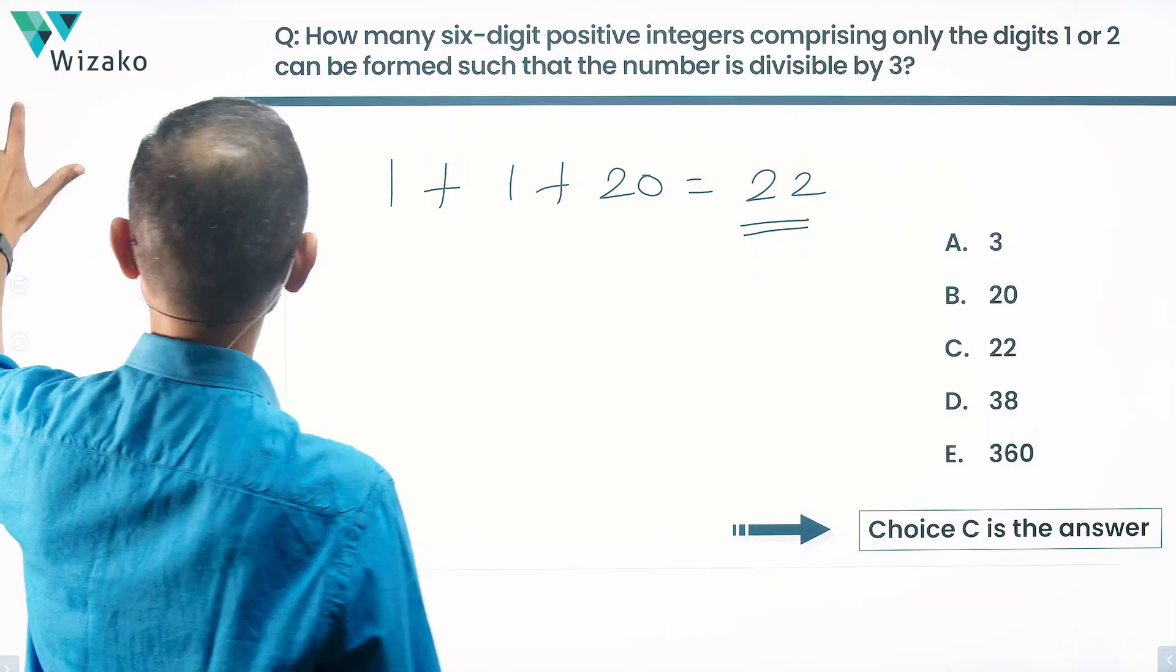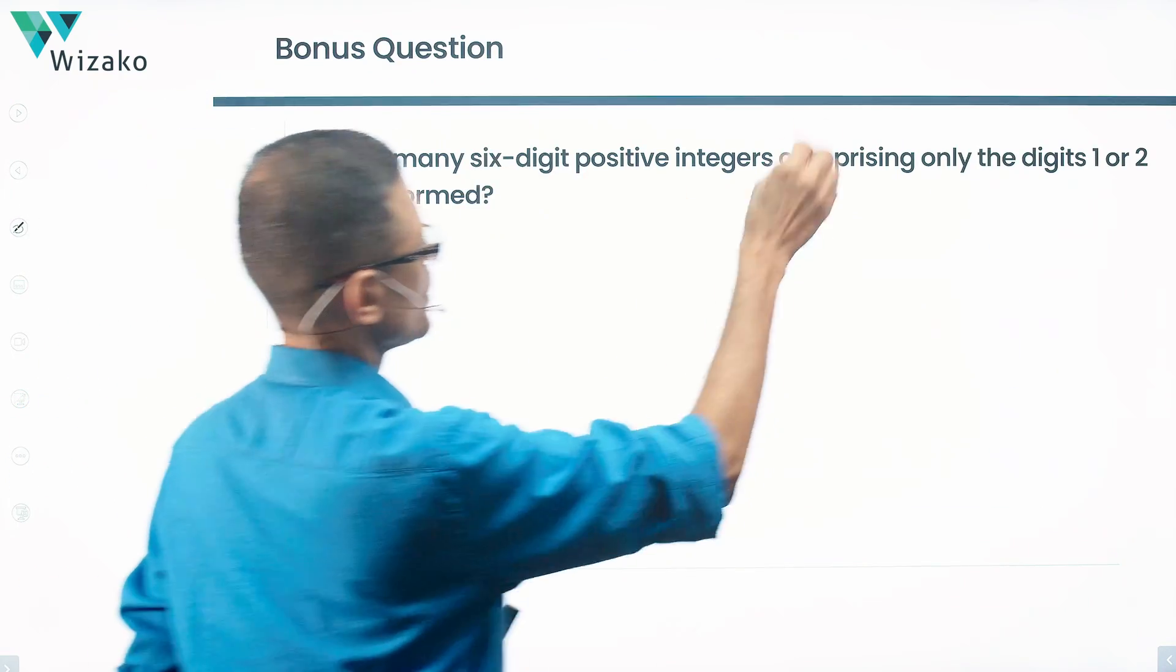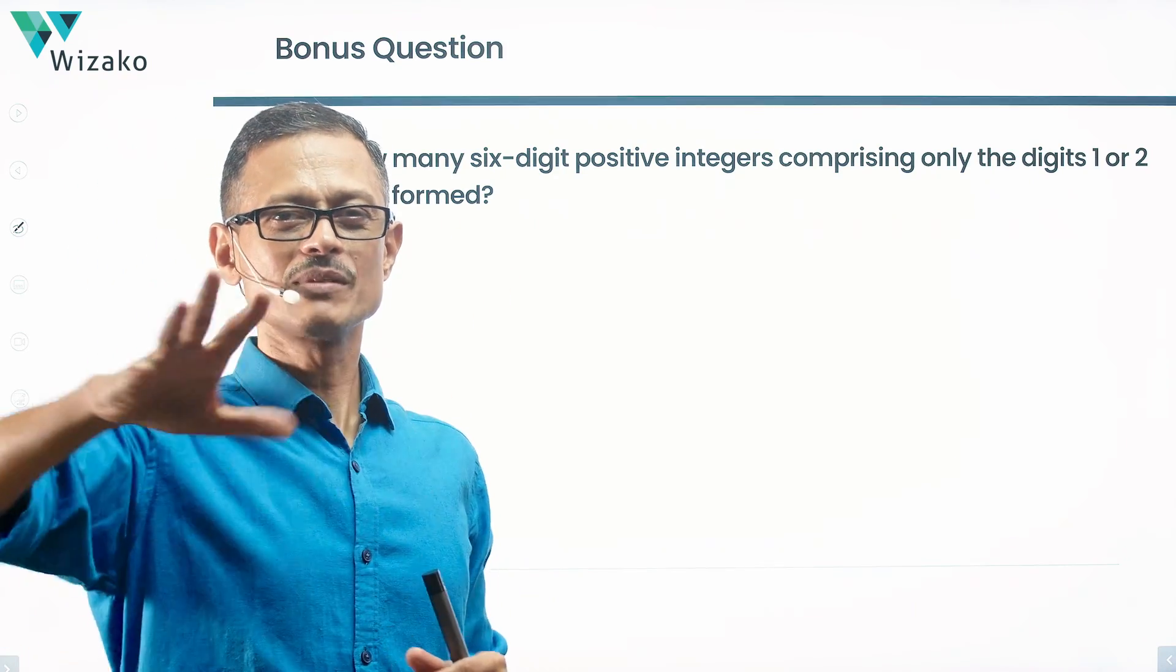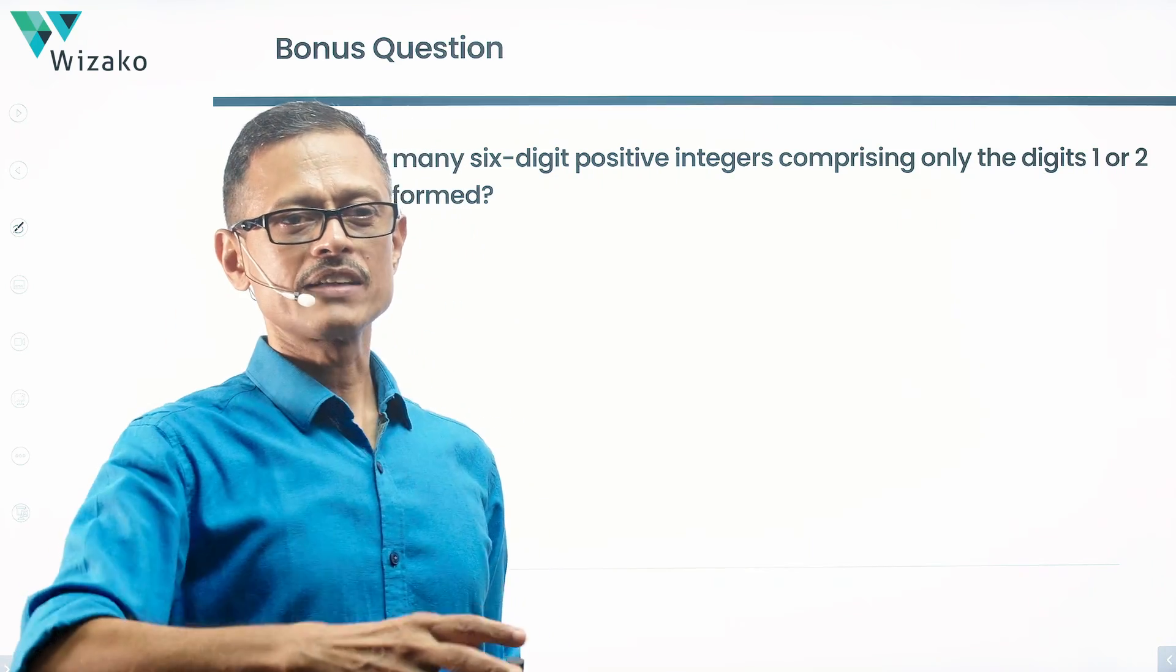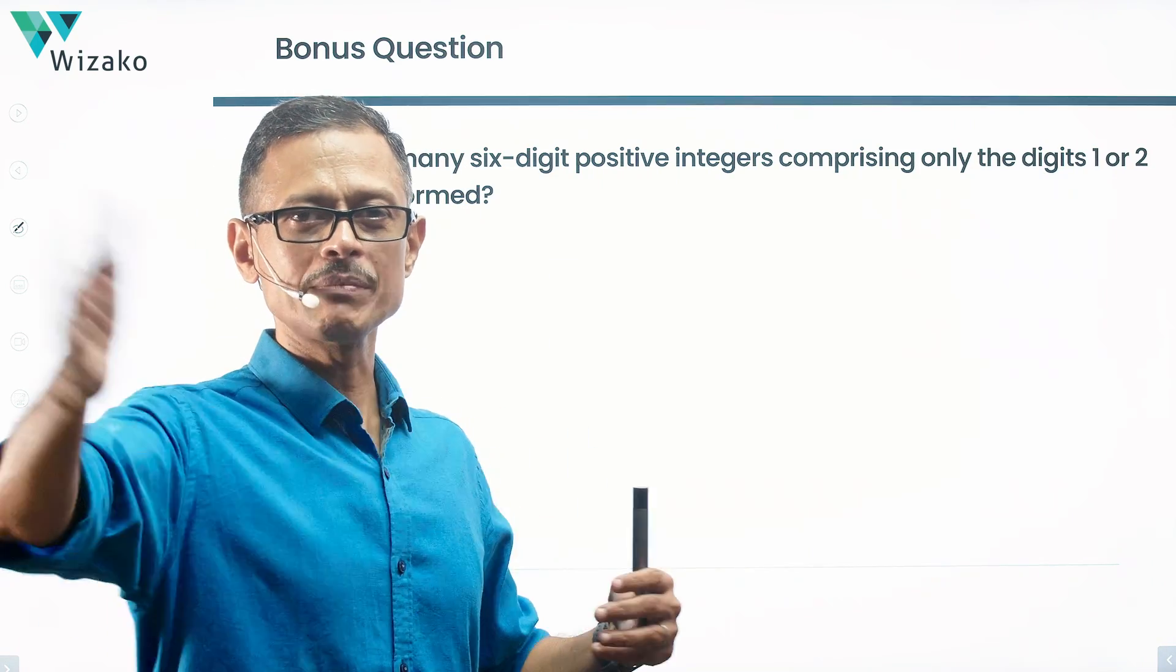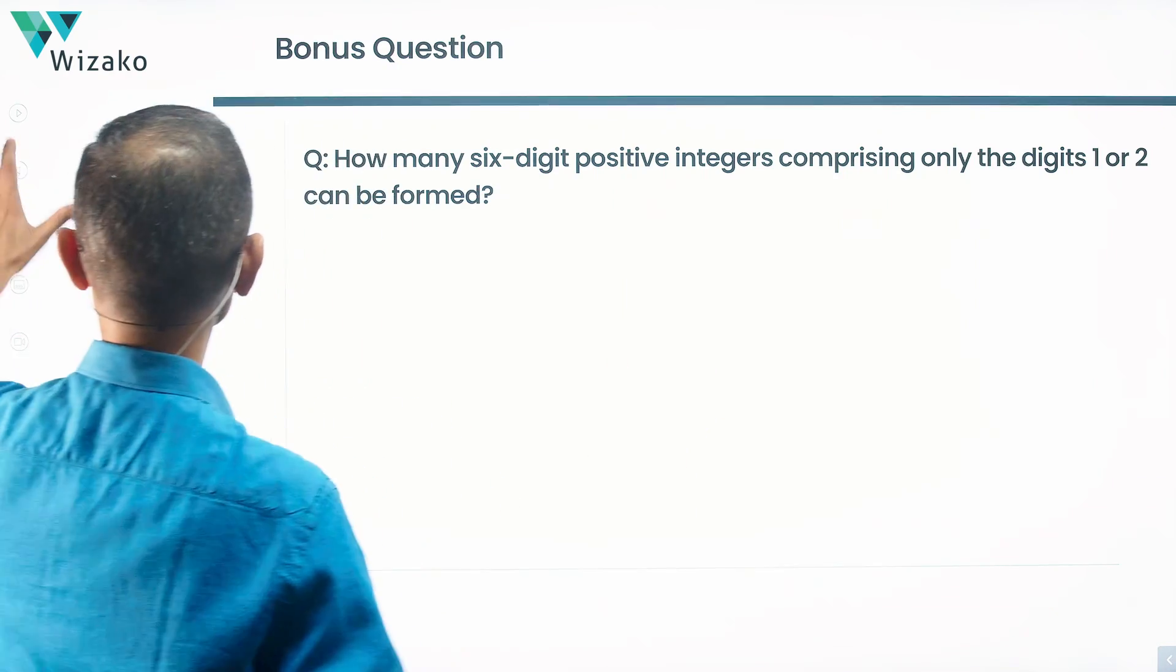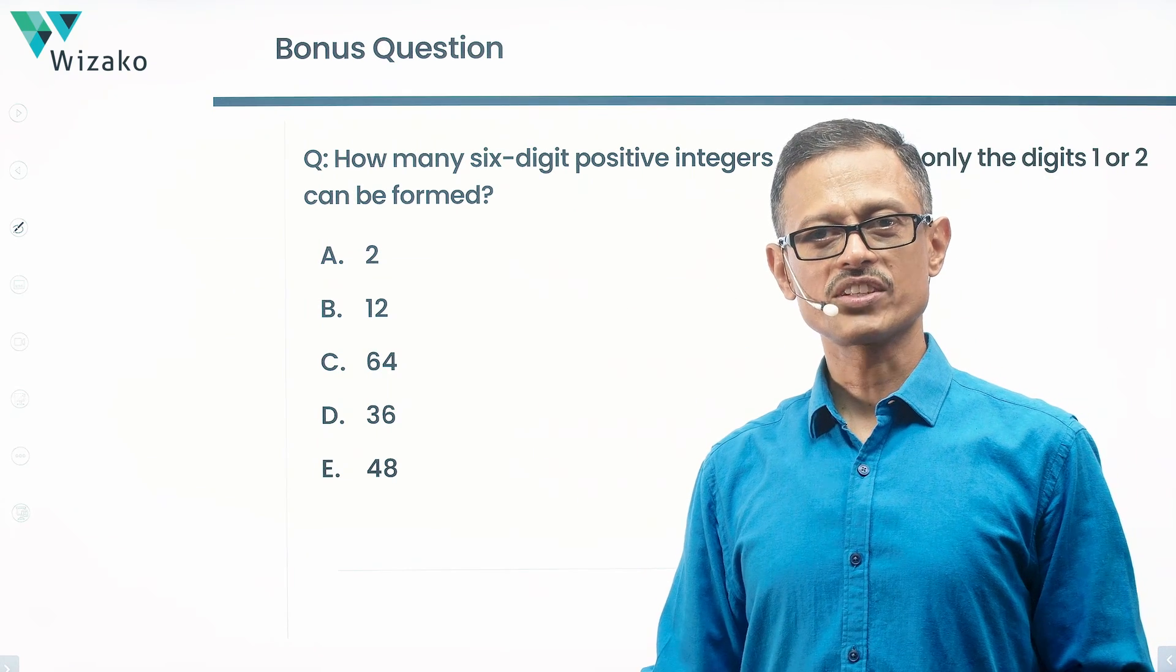Let's look at a bonus question for this one too. The bonus question reads as follows: How many 6 digit positive integers comprising only the digits 1 or 2 can be formed? Like no constraints, no divisibility, nothing. A very simple question. So all of them can be 1s. All of them can be 2s. 5 twos and 1 one. Anything is possible. So here are the 5 answer options. Pick the one that makes sense and post your answer to the comment section of this video. Best wishes.